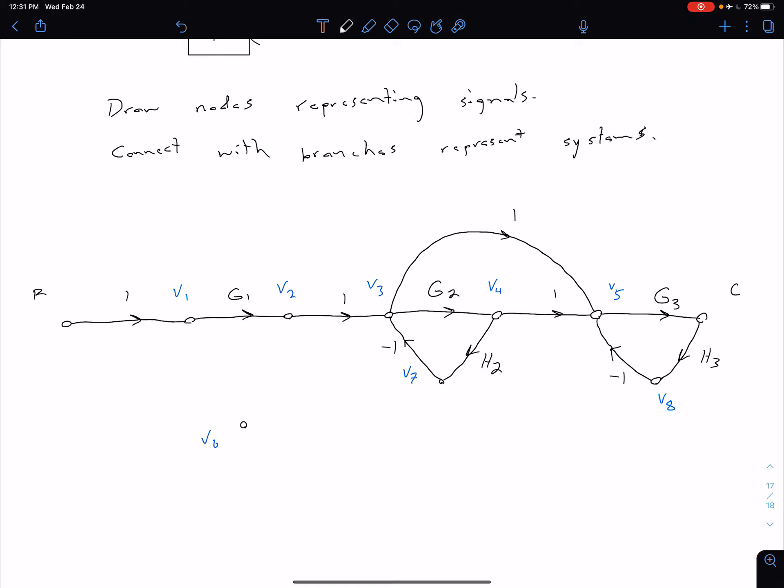So we have to come from V4 over here and multiply by H1. And that's going to get us our V6 signal.